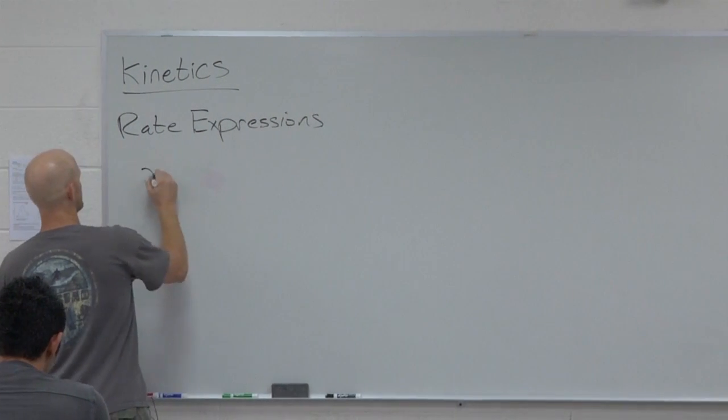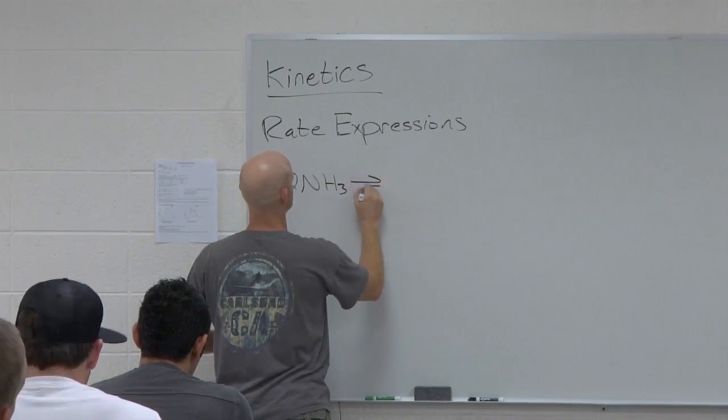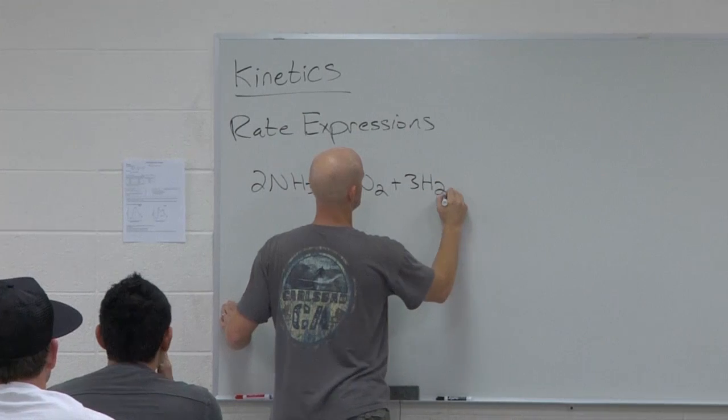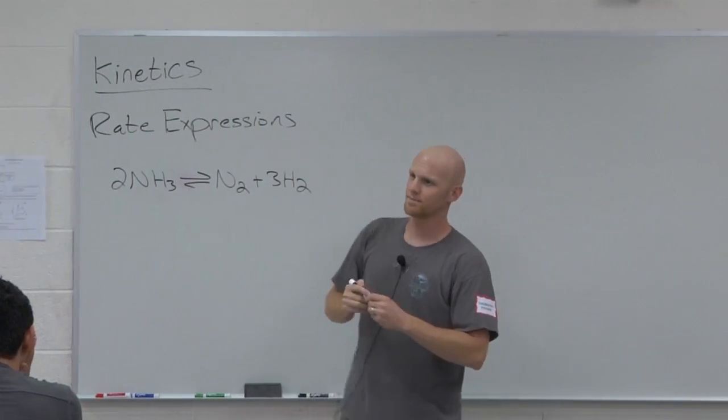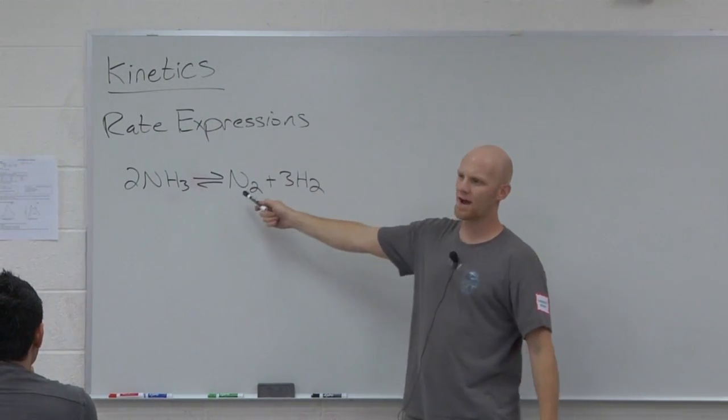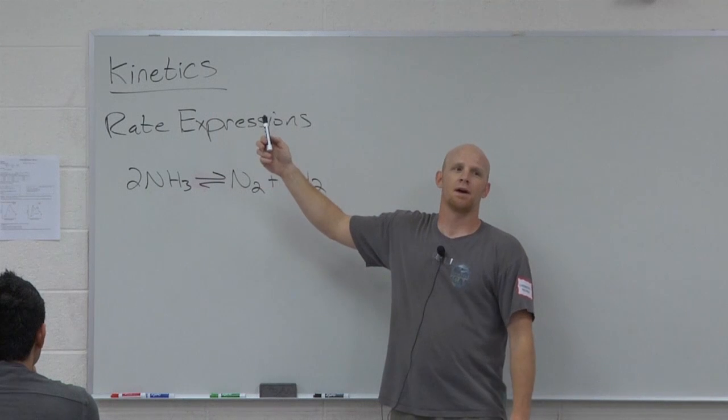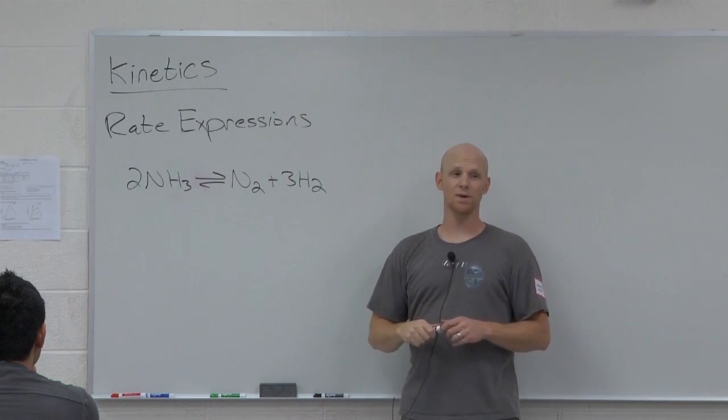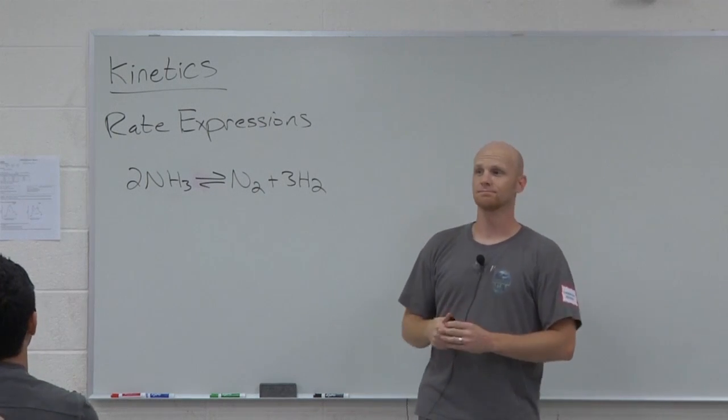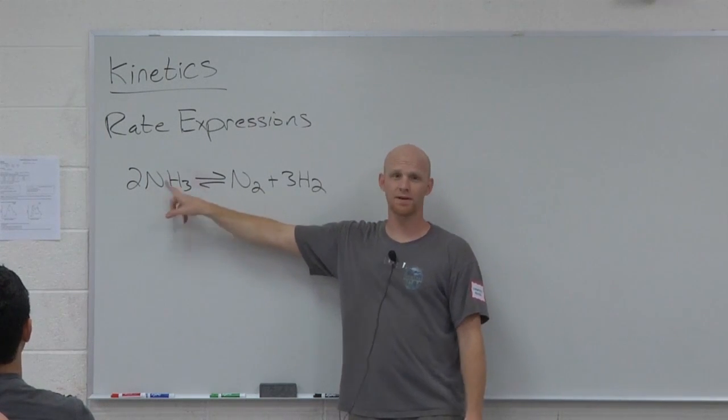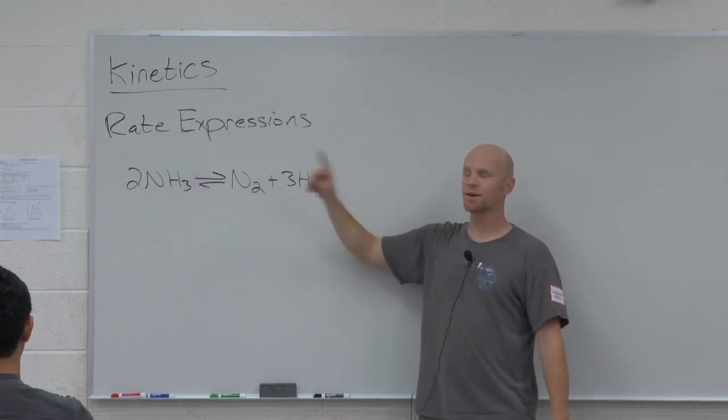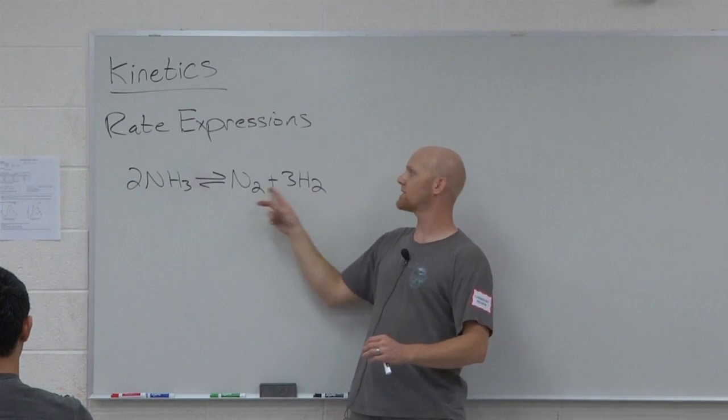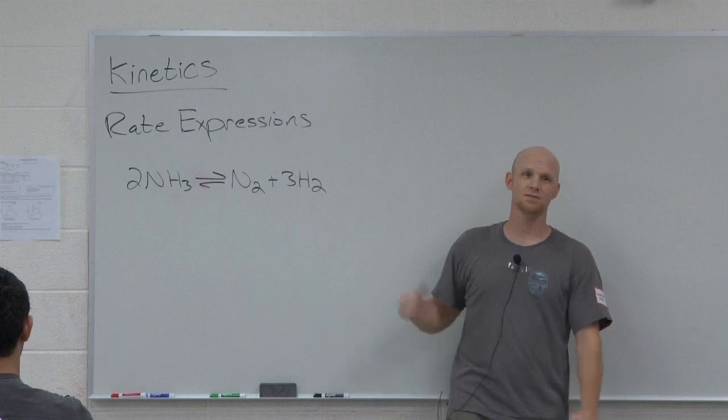And the one I'm going to look at here is this one. Let's say I had this chemical reaction going. How many different ways would there be to measure the rate of this reaction, or at least easy ways? There'd be three. I could measure how fast he's disappearing, I could measure how fast he's appearing or he's appearing. There's three ways.